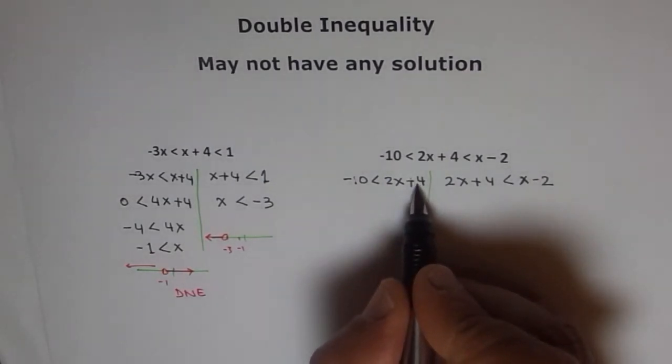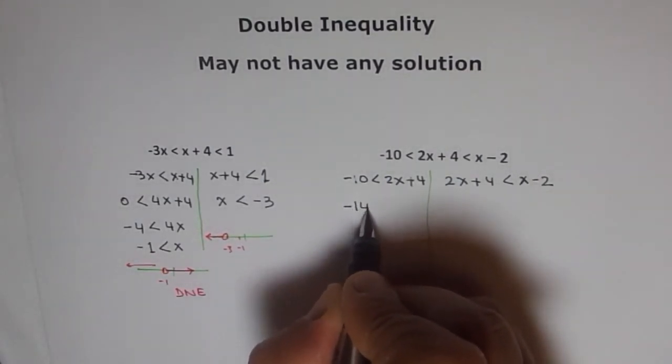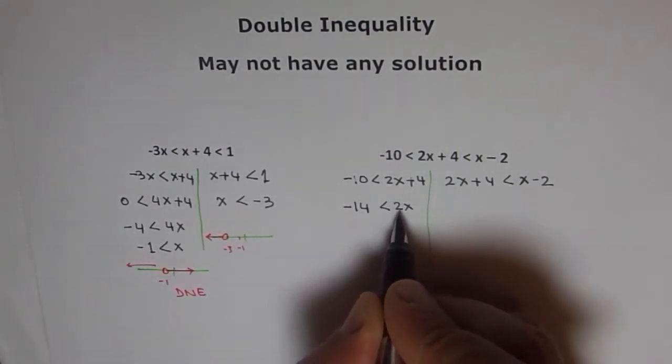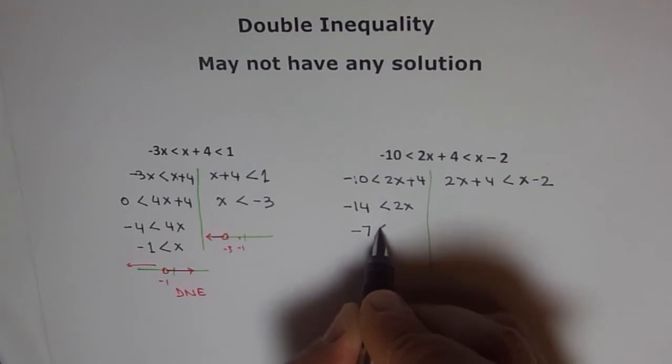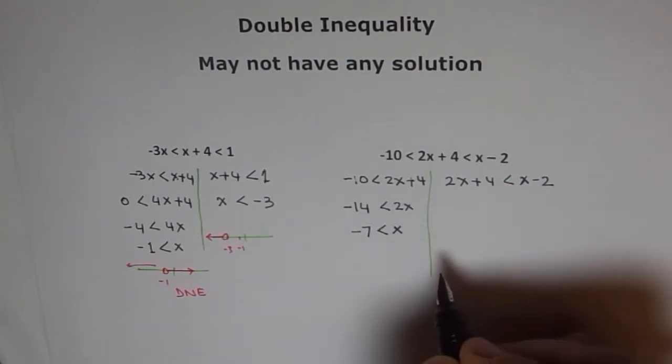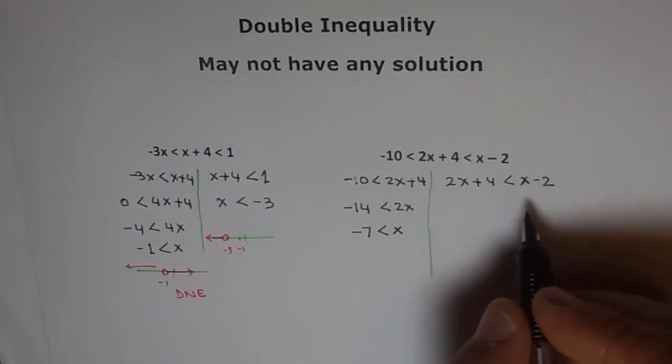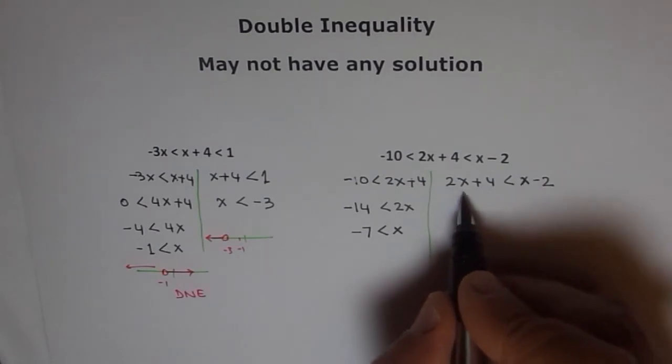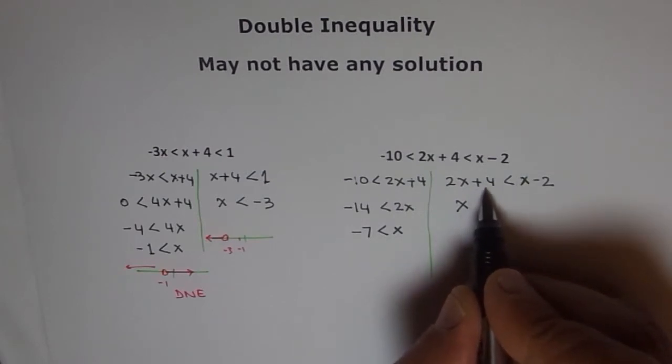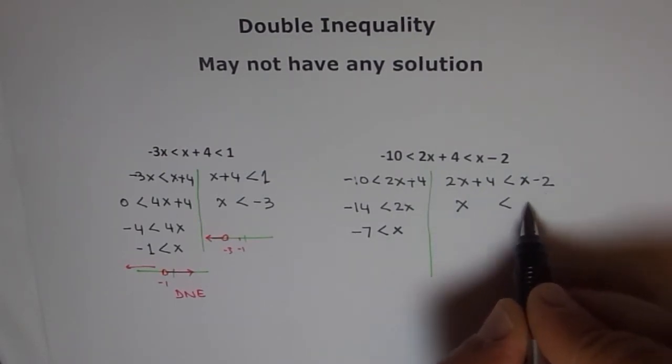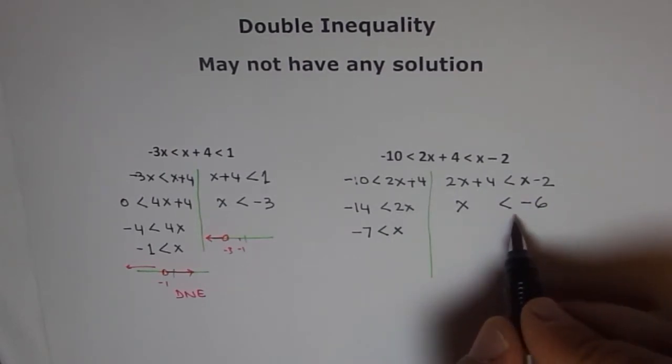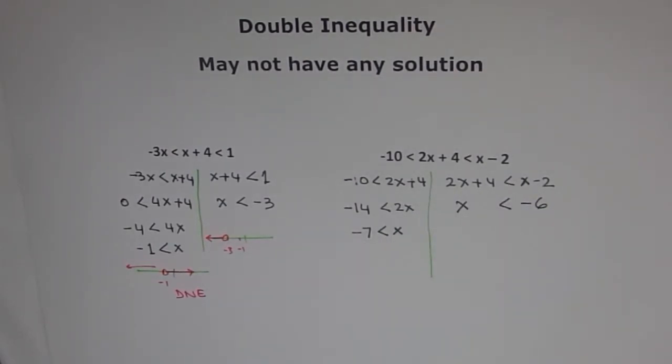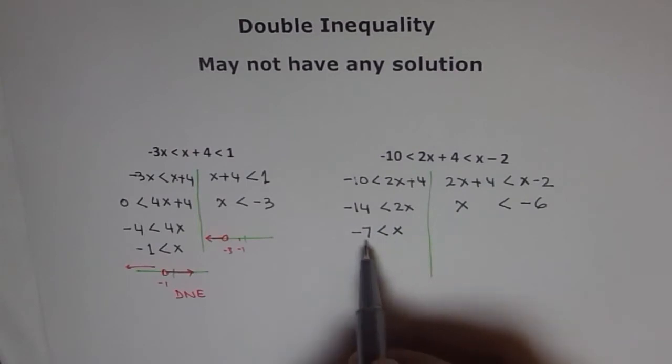Well, here we can bring 4 this side. So we get minus 14 is less than 2x and divide by 2 gives us minus 7 is less than x or x is greater than minus 7. Over here, we can take away x and take away 4. If we take away x, we get 2x minus x, which is x. And then take away 4, we take away 4 from here and left with minus 2 minus 4, we get minus 6. So this side solution is that x is less than minus 6. And on that side, it is x is greater than minus 7.